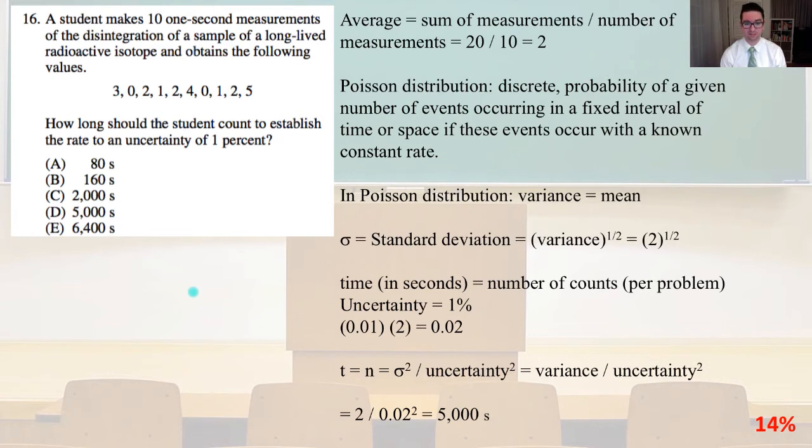In the Poisson distribution, variance equals the mean. Sigma equals our standard deviation, and the square root of the variance equals the square root of 2. Our time in seconds equals the number of counts, and our uncertainty equals 1%, so it's 0.01 times 2 equals 0.02. We have our t time equals n, our number of counts, equals sigma squared divided by the uncertainty squared, which equals our variance divided by our uncertainty squared. 2 divided by 0.02 squared equals 5,000 seconds. That is answer D.